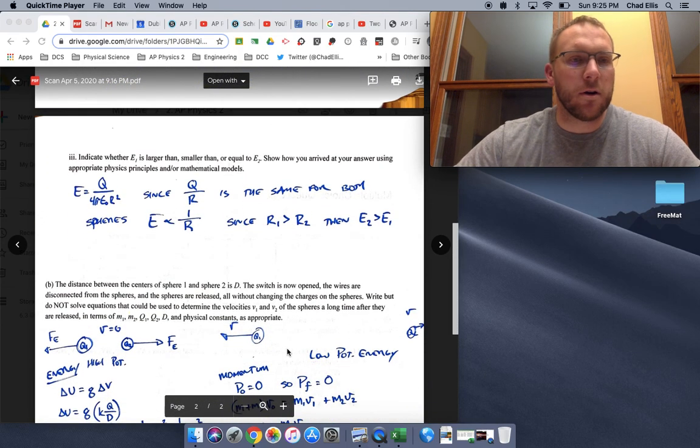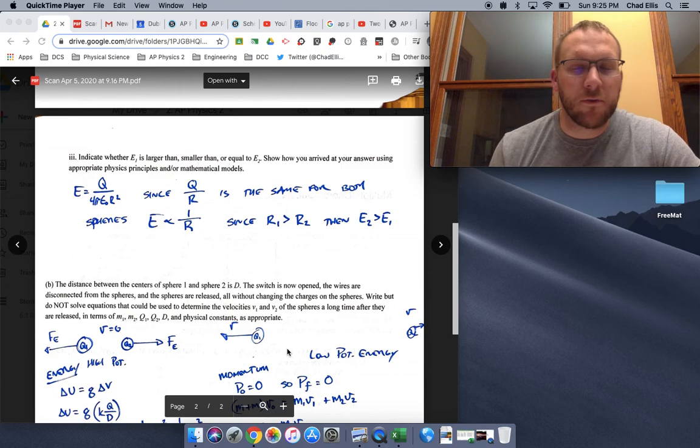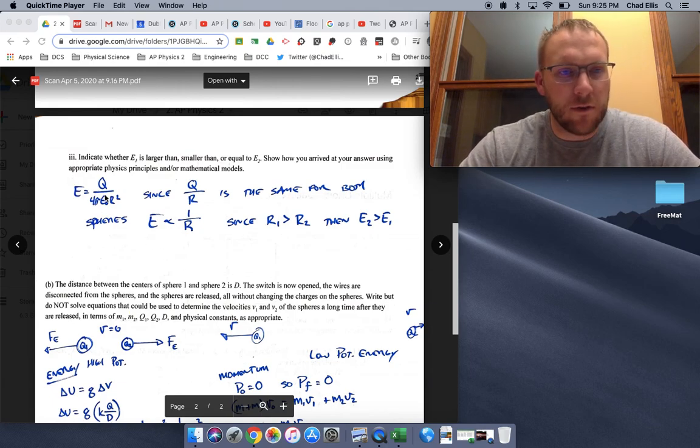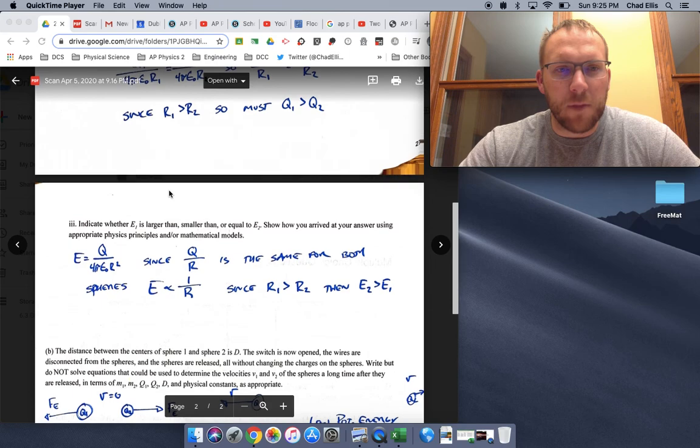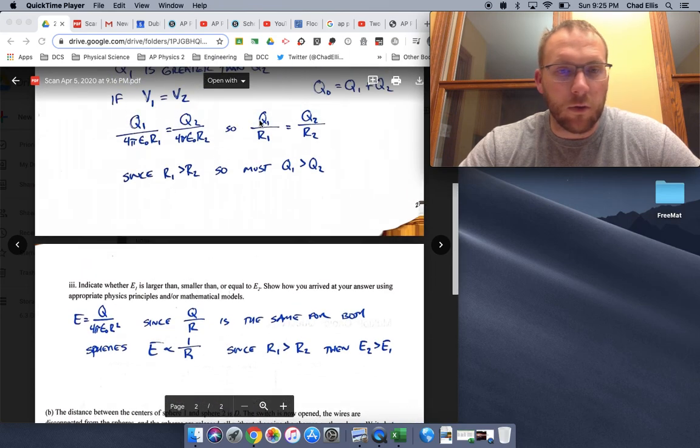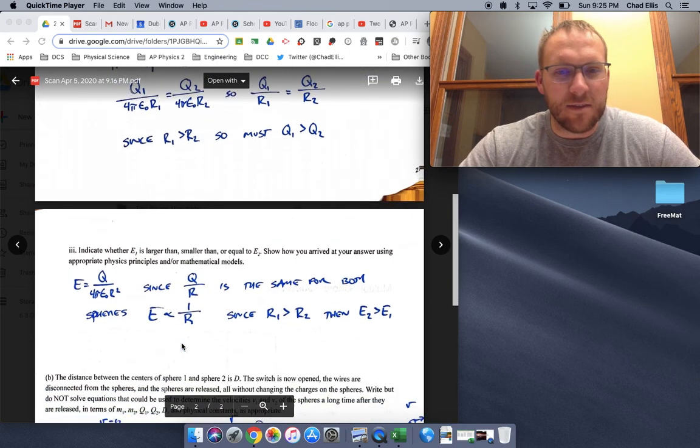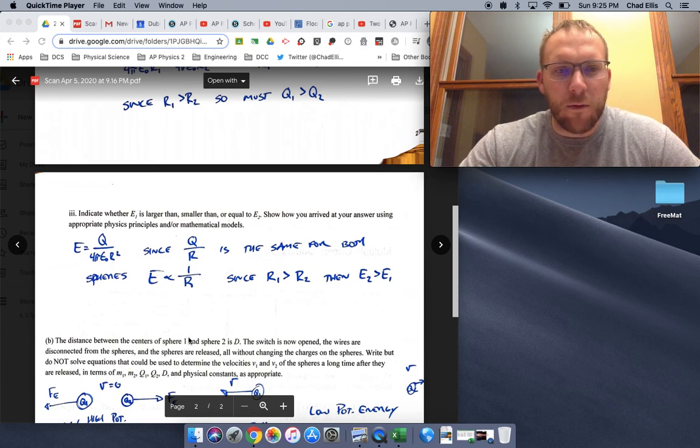Going down to the third part, indicate how the electric fields compare. Here's what we know. Electric field is based on the charge, 4 pi epsilon not over R squared. What we just said from the last one is that Q over R is the same for each of them. So that ratio Q over R is the same.